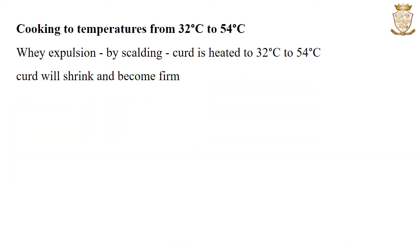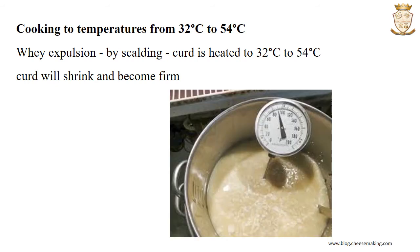Next is scalding or cooking of the curd to temperatures ranging from 32 to 54 degrees Celsius. Whey expulsion is further assisted by scalding when the curd is heated to this high temperature, causing the curd to shrink and become firm.